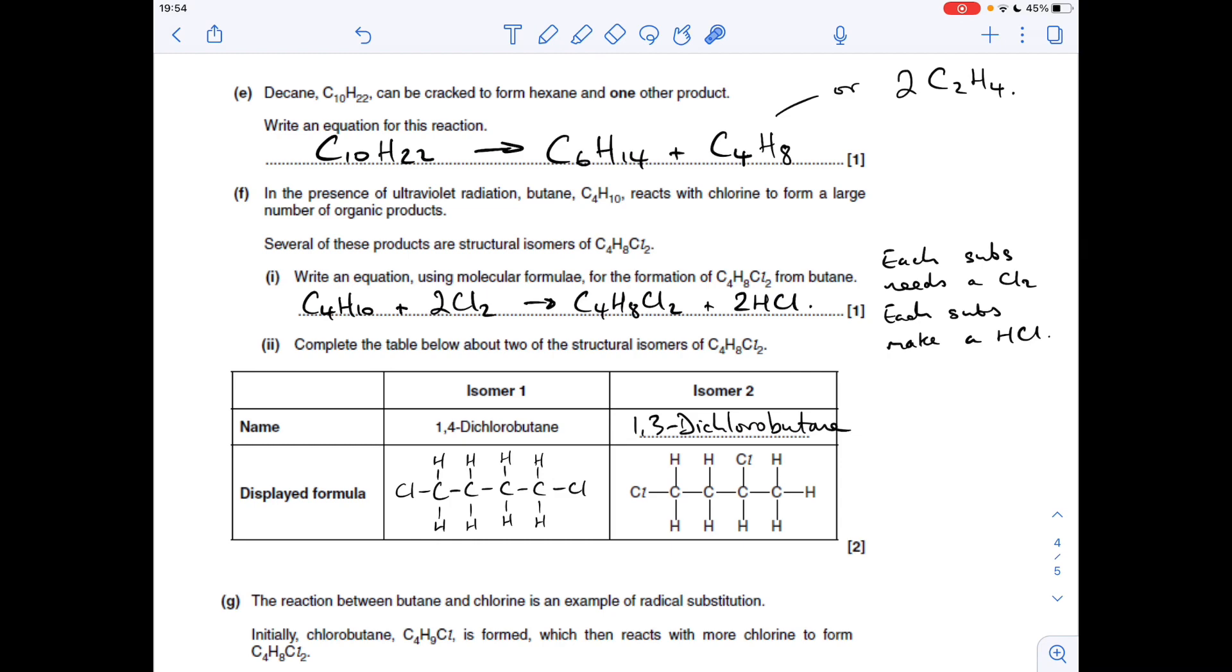Next part of the question: the displayed formula of 1,4-dichlorobutane, 1,4 is that, and the name of this one—you've got chlorine at one and three—so it's 1,3-dichlorobutane.